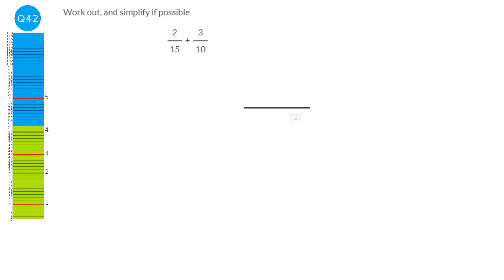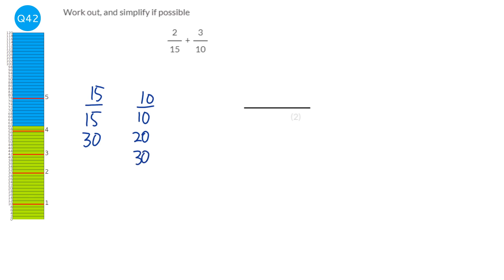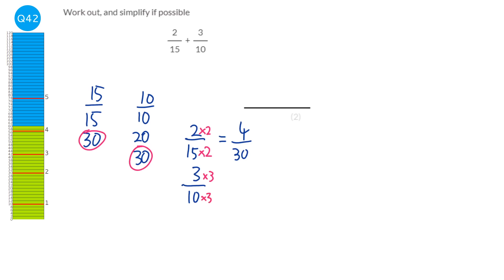These fractions have different denominators, so we need to make them the same. We've got 15 and 10 — 30 is in both times tables. For 2 over 15, multiply top and bottom by 2 to get 4 over 30. For 3 over 10, multiply top and bottom by 3 to get 9 over 30. The question becomes 4 over 30 plus 9 over 30. When denominators are the same, we just add the numerators: 13 over 30. Since 13 is prime and doesn't go into 30, our answer is 13 over 30.